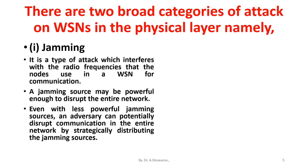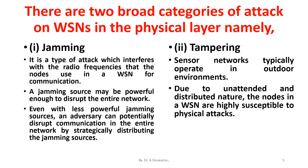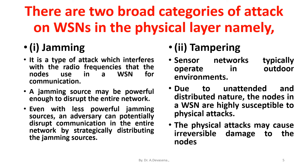Tampering. Sensor networks typically operate in outdoor environments. Due to their unattended and distributed nature, the nodes in a wireless sensor network are highly susceptible to physical attacks. The physical attacks may cause irreversible damage to the nodes.